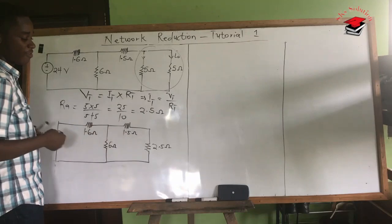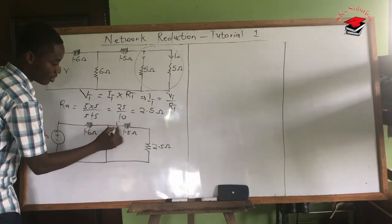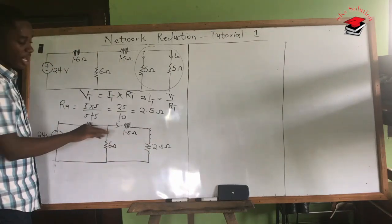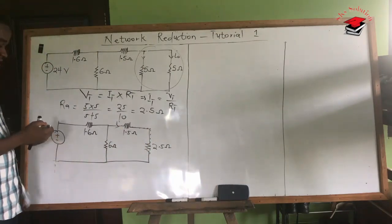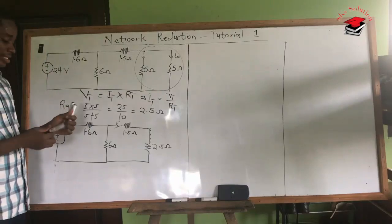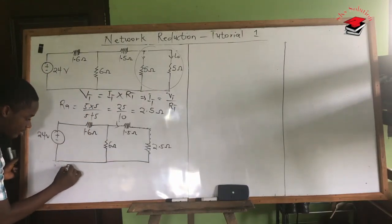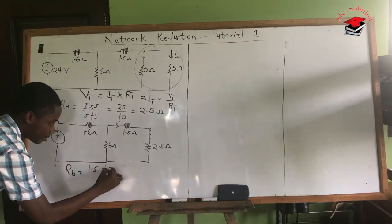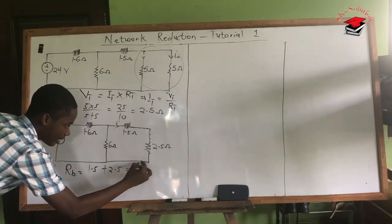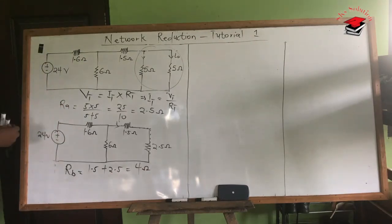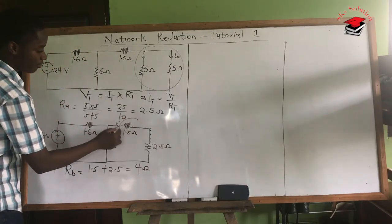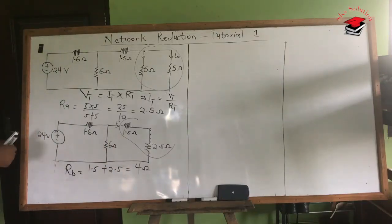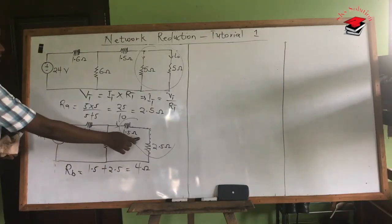Looking at this redrawn circuit with 24 volts, 1.5 ohms, and 2.5 ohms — adding from the back — we can see that 2.5 ohms is in series with 1.5 ohms, because the same current flows through both of them on the same branch. So let's calculate the equivalent RB = 1.5 + 2.5, which gives us 4 ohms.